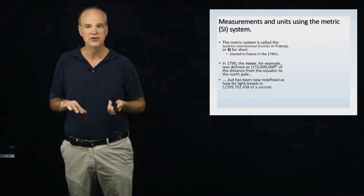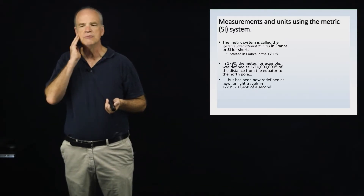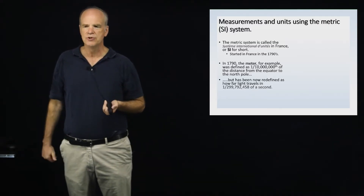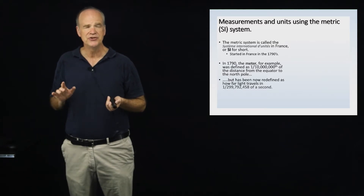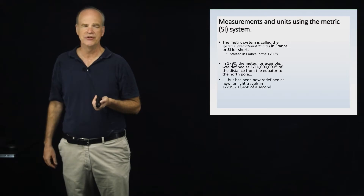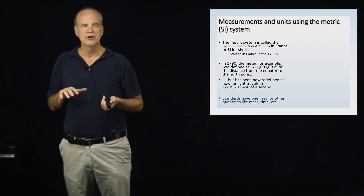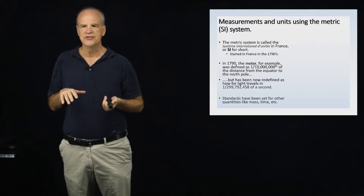We don't really use that original definition anymore. The preferred definition now is that the length of a meter equals how far light travels in a certain small fraction of a second. In addition to the meter, there are other base quantities — for example, base quantities for time and for mass.